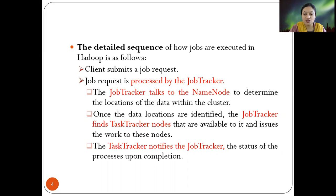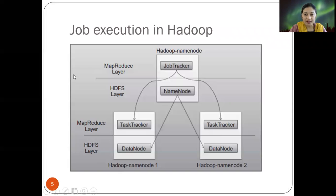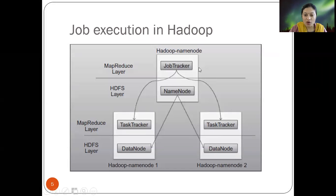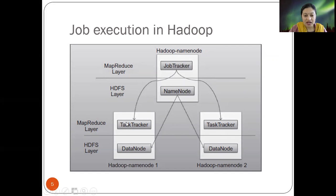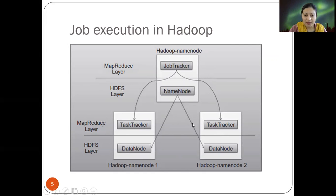The task tracker notifies the job tracker of the status of the processes upon completion. In the diagram, the Hadoop name node is the top-level component. The job tracker and the name node communicate under the HDFS layer. Below them, the task tracker and data node communicate. A job is divided into multiple tasks at the MapReduce layer, given to the task tracker to execute, and the task tracker notifies the job tracker upon completion.